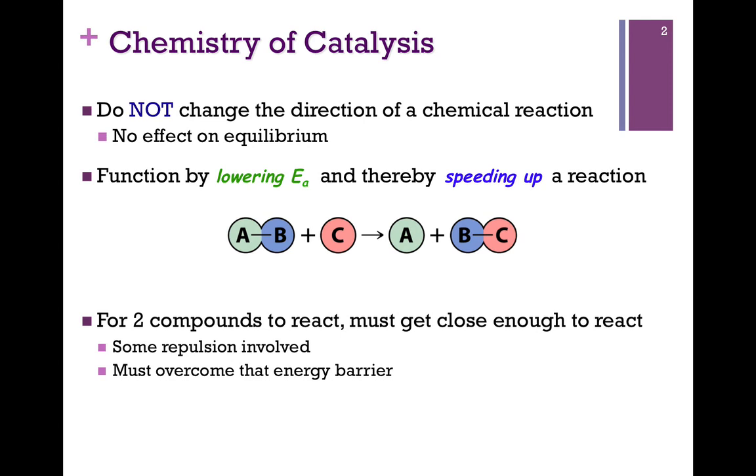Instead, they function by lowering the activation energy, the E sub A, and that speeds up the reaction. In our example here, we have molecule AB reacting with molecule C, and that gives us the products A and BC. In other words, we've transferred group B from A to C.